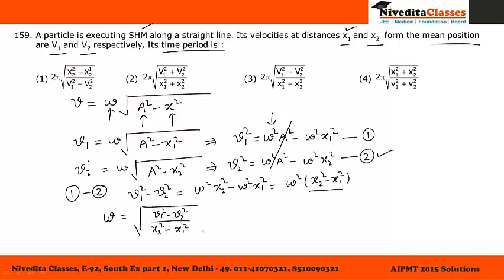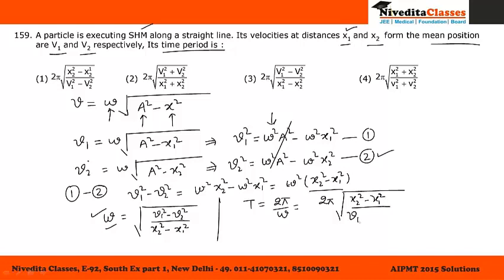Using the relation T equals 2-pi divided by omega, substituting the expression for omega, the time period is: T equals 2-pi times the square root of (X2-squared minus X1-squared) divided by (V1-squared minus V2-squared). This is our final answer.